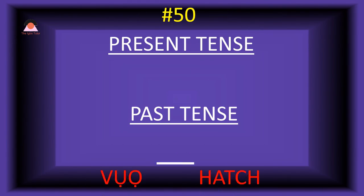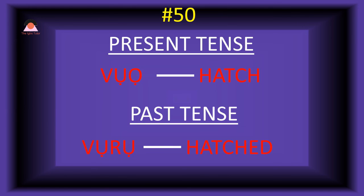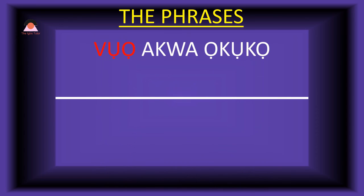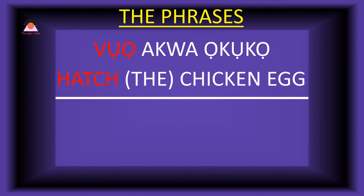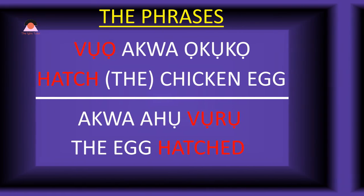Word number fifty: 'vor,' meaning 'hatch.' The past tense of vor is 'voro,' meaning 'hatched.' Present tense phrase: 'vor akwa-koko' — hatch chicken egg. Past tense: 'akwa-ho voro' — the egg hatched.